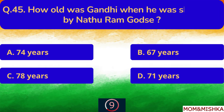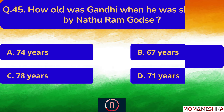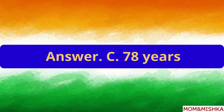How old was Gandhi when he was shot dead by Nathuram Godse? He was 78 years old. Option C.